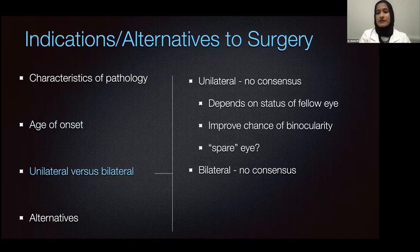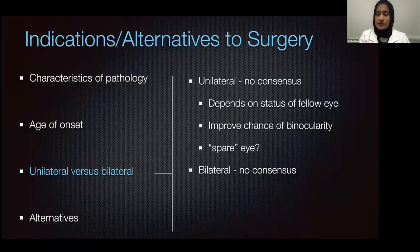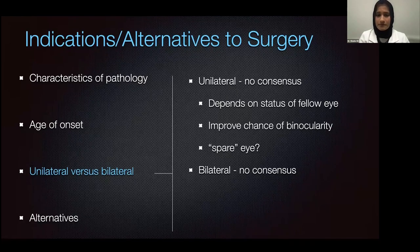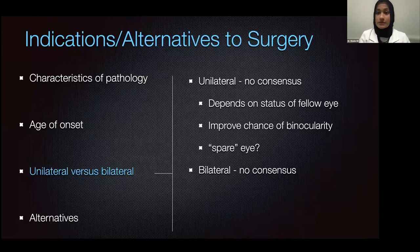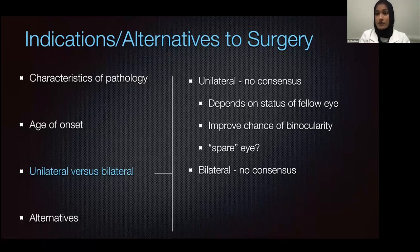Unilateral versus bilateral is extremely contentious — there is no consensus. Some corneal specialists will not operate on a unilateral corneal opacity if the fellow eye has normal vision. Others argue it depends on the status of the fellow eye and that surgery on a unilateral eye can improve the chance of binocular vision through development of stereo. However, the chance of vision in that second eye being as good as the first eye is very, very low, so it could be considered a 'spare eye.' The patient is typically considered functionally monocular, which does increase the chance of trauma to that second eye.